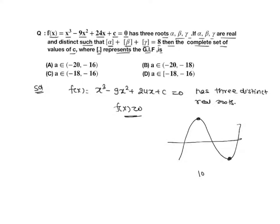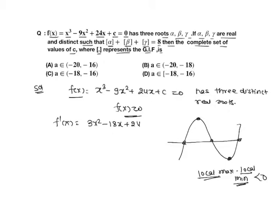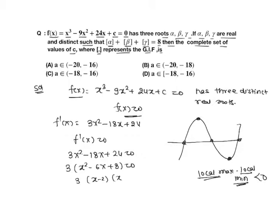For three distinct real roots, local maxima times local minima must be less than zero. To find local maxima and minima, we differentiate f(x). So f'(x) = 3x² - 18x + 24. Setting f'(x) = 0 gives 3x² - 18x + 24 = 0, or taking 3 common: x² - 6x + 8 = 0, which factors as 3(x - 2)(x - 4) = 0. So at x = 2 we get local maxima and at x = 4 we get local minima.